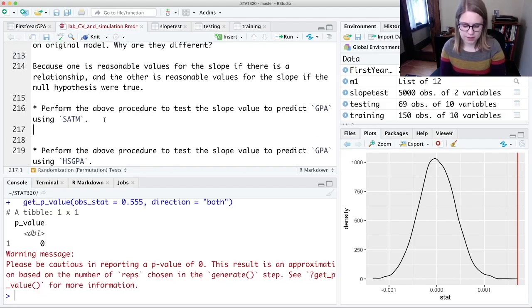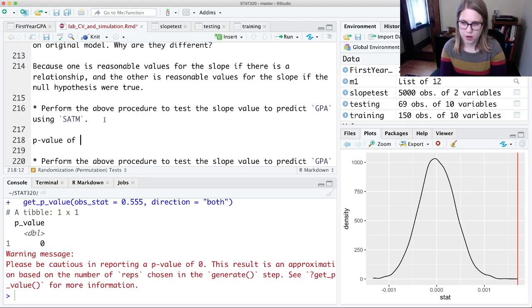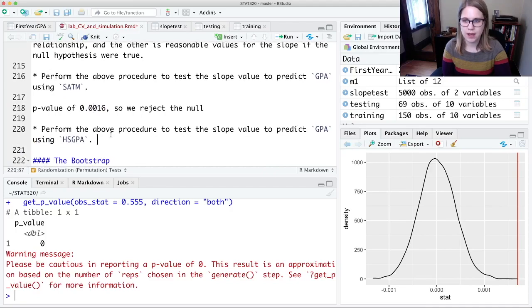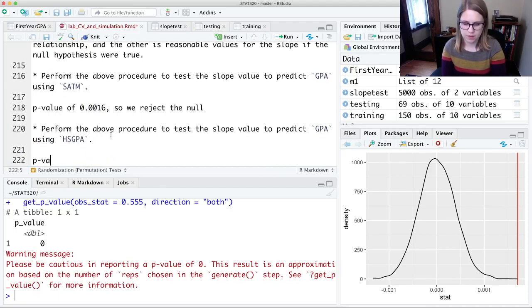Okay, so when I did this, I found a p-value of 0.0016. So we reject the null. And you might have found a slightly different p-value, but it should be on that same scale. And for this one, I found a p-value of approximately 0.00. So we reject the null.